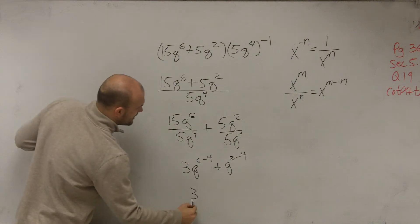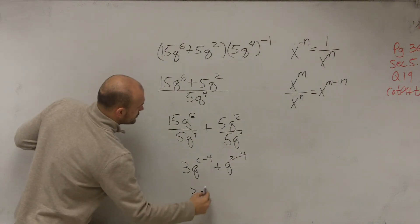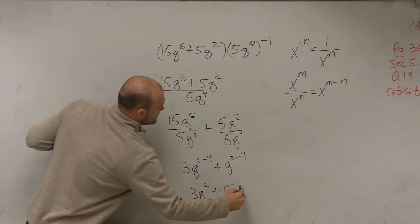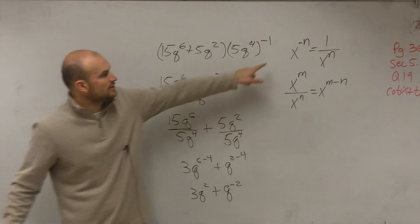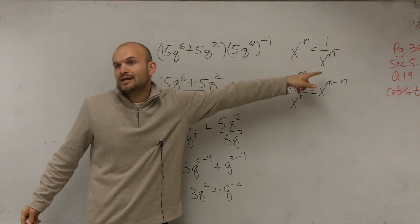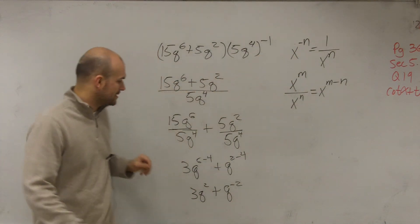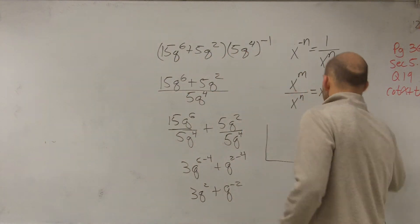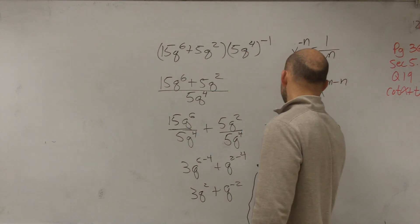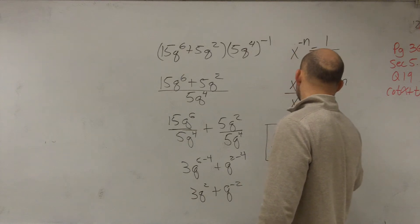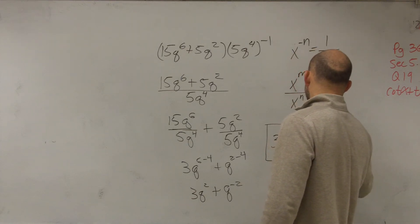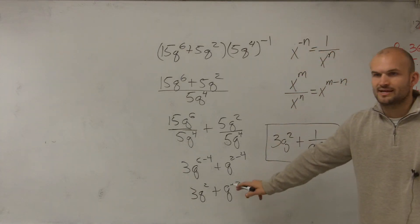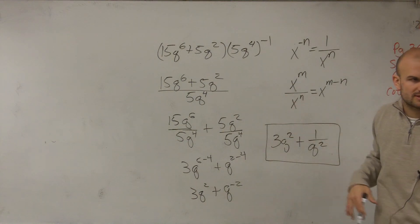So therefore, you have 3q squared plus q to the negative second power. But remember, when you have a negative exponent, you've got to write it as the denominator. So my final answer is going to be 3q squared plus 1 over q squared, because you've got to make sure you write that as a positive exponent by putting it in the denominator.